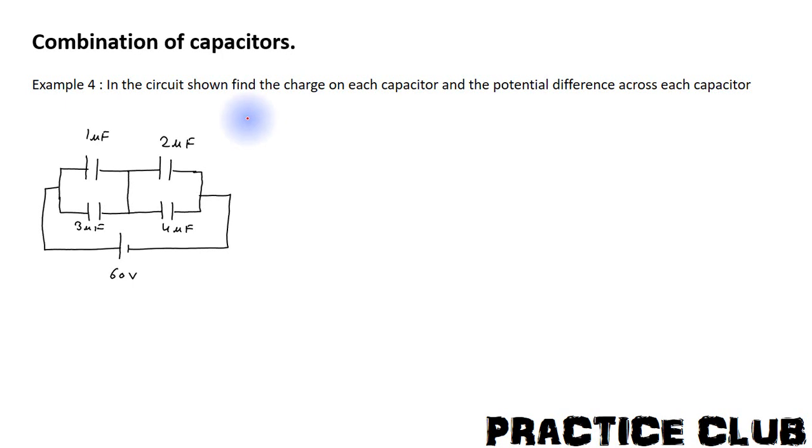Next example is a very similar example as the previous one. Just here the difference is that we have connected these two points to a wire. Again we have to find the charge on each capacitor and the potential drop across each capacitor.